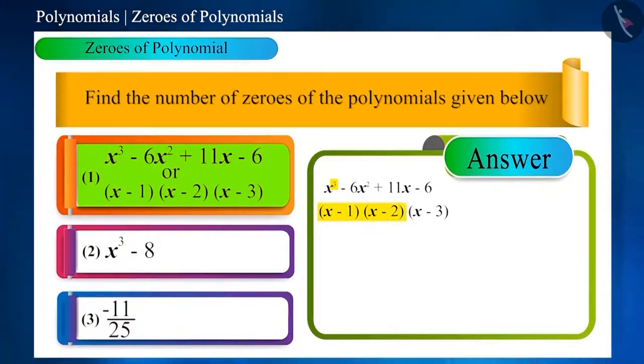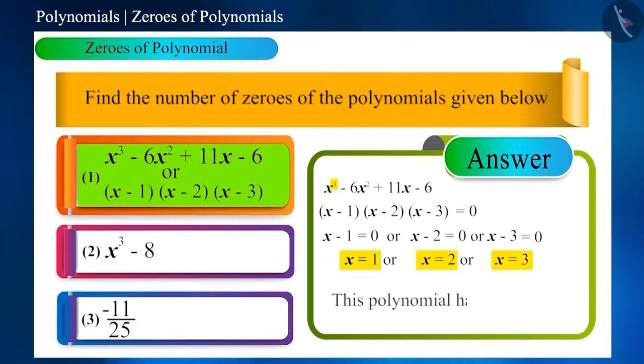If we equate (x - 1)(x - 2)(x - 3) to 0, then we will get x = 1 or x = 2 or x = 3. Therefore, the first polynomial has three real zeros: 1, 2, and 3. Real, because these are all real numbers.